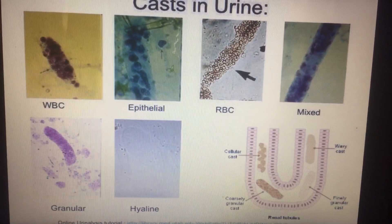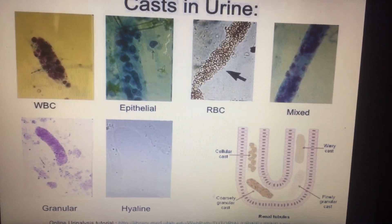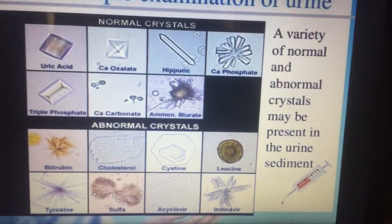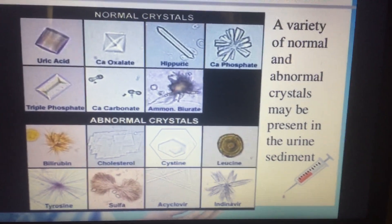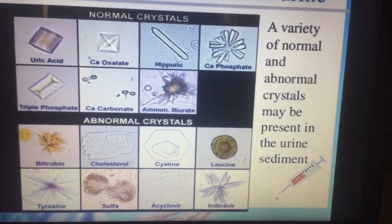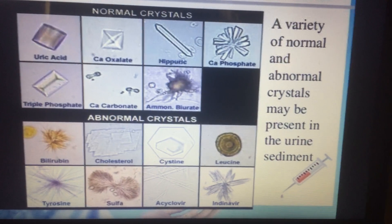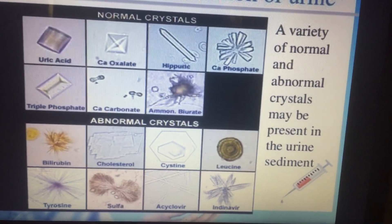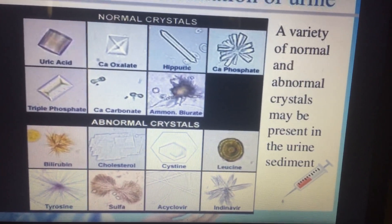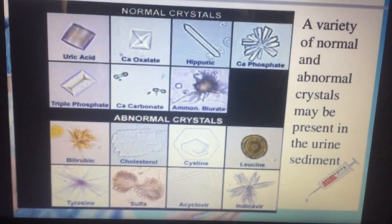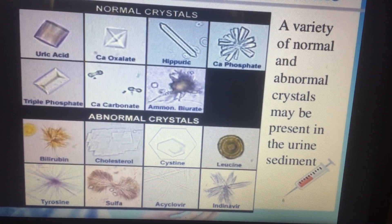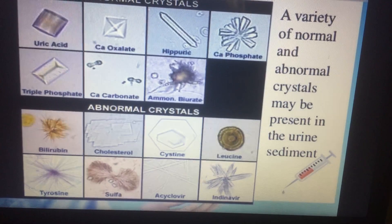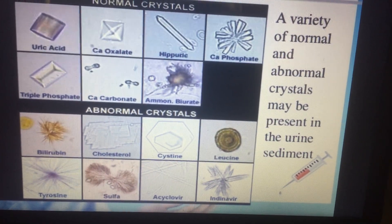This diagram shows different types of casts. Whenever there is a presence of casts, it indicates glomerular or tubular involvement. These are different types of crystals. In normal urine, you will get uric acid, calcium oxalates, hippuric acid, calcium phosphates, triple phosphates, calcium carbonate, ammonium biurates. There are also abnormal crystals which can sometimes be present, such as cholesterol crystals, cystine, leucine, and tyrosine.